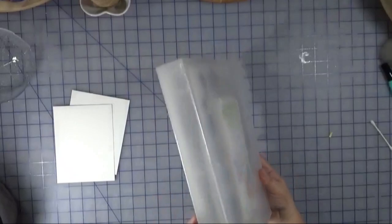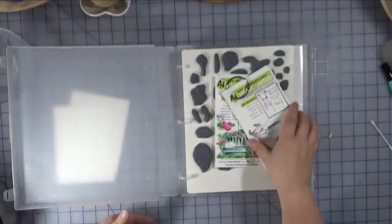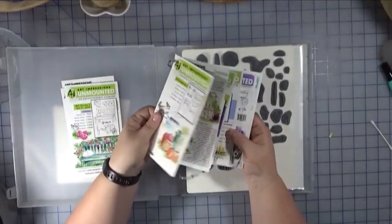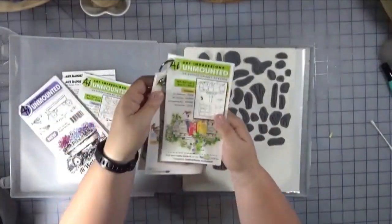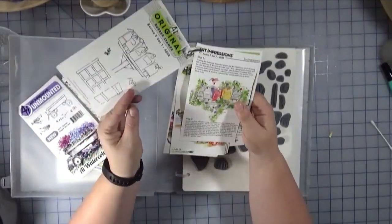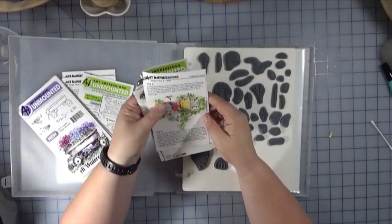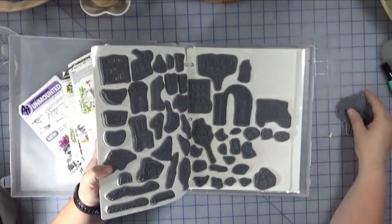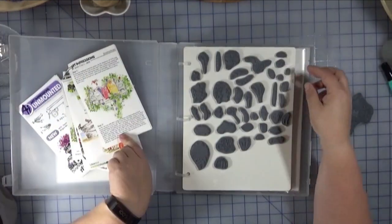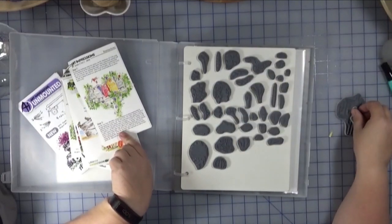I'm using some Canson watercolor paper and I store all of my stamps belonging to this collection in one of these binder cases because they all work together. I found it easier to sort them by type and intermix the different sets.